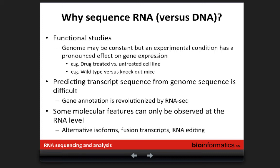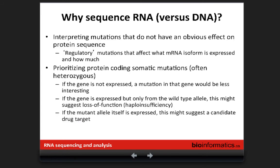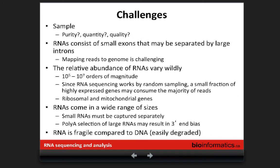Why sequence RNA versus DNA? There's a functional component — the genome is fairly constant, but RNA gives you a readout of what's happening in the cell's environment. Projecting transcript sequences from the genome alone is very difficult; RNA-seq makes this much easier by actually interrogating transcribed sequences. Some molecular features can only be observed at the RNA level — alternative isoforms, fusion transcripts, RNA edits. In cancer, sequencing RNA helps interpret somatic mutations by showing which are expressed, identifying regulatory mutations, and prioritizing protein-coding mutations where allelic bias between wild-type and mutant can be observed.